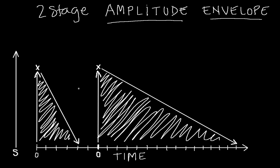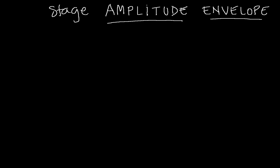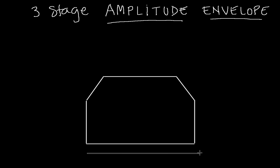Up from there, the next simplest envelope we can have is a simple three-stage amplitude envelope. You can think of it like an office-type envelope — the flap at the top is different. This is still time from left to right.